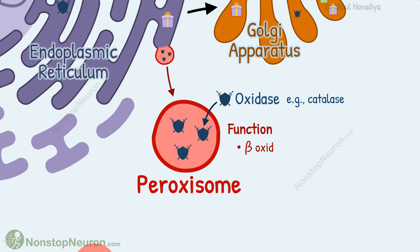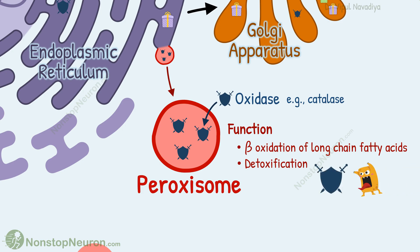Their main function is beta-oxidation of long-chain fatty acids. Another important function is detoxification, which means they oxidize the toxic substances that might otherwise be harmful to the cell. In the body, detoxification is mainly the function of the liver, so liver cells have lots of peroxisomes.